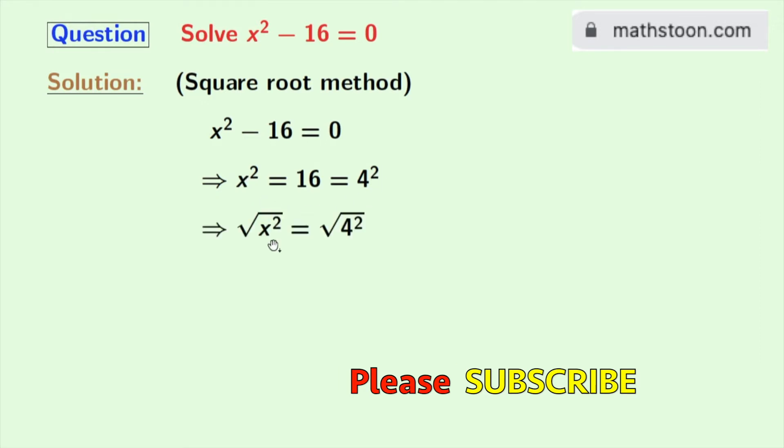Doing that we get √(x²) = √(4²). From this we get x = ±4, as we know that √(a²) = ±a. Here a is 4.